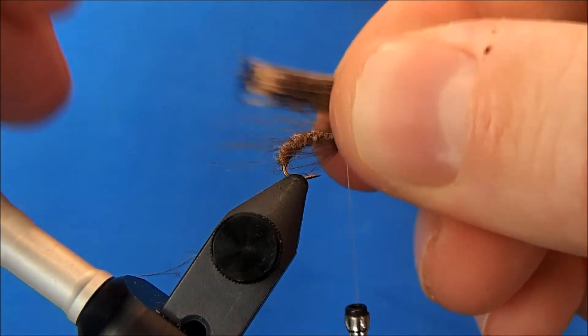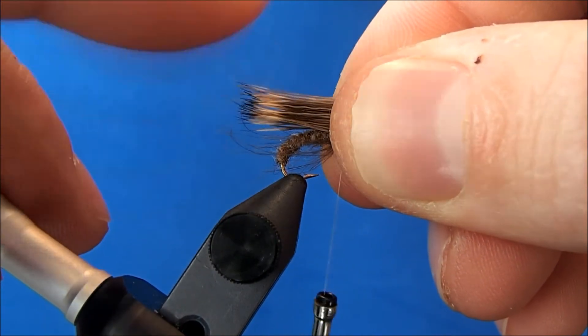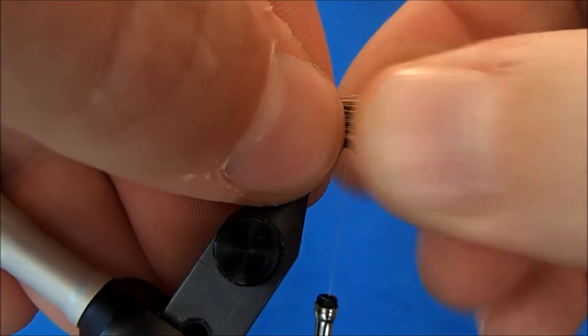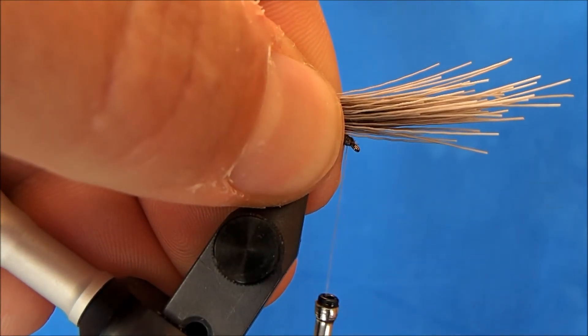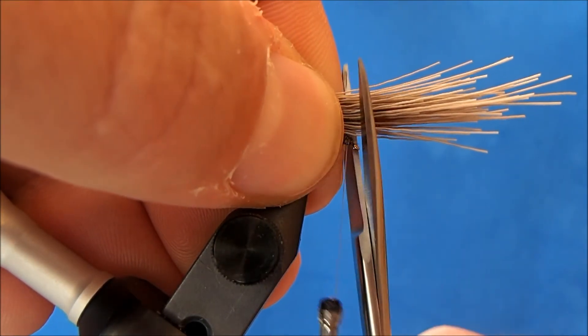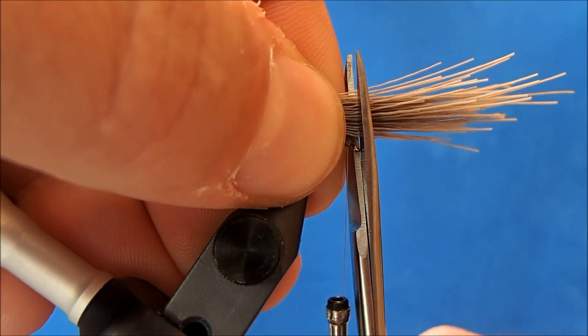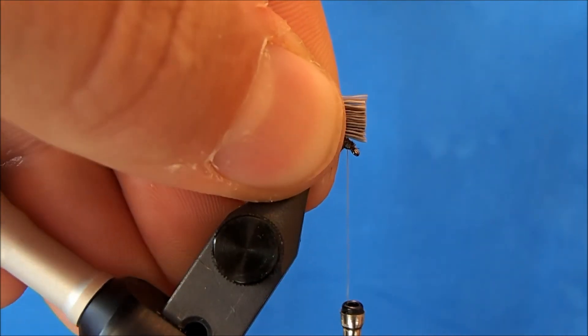I'll hold it on top and I want to extend it to the bend in the hook or just beyond. This will stand up once I've wrapped it in, so you can go a little bit longer. And then I'll take a straight cut up over the eye.